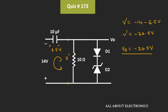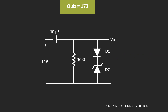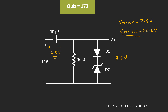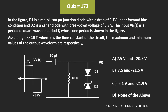Once again, during the positive half cycle, the output voltage Vout will be equal to 7.5V, because at that time the voltage across the capacitor is equal to 6.5V. So in this way, in this clamper circuit, the maximum output voltage Vmax is equal to 7.5V and the minimum voltage Vmin is equal to minus 20.5V. That means for the given question, A is the correct answer.